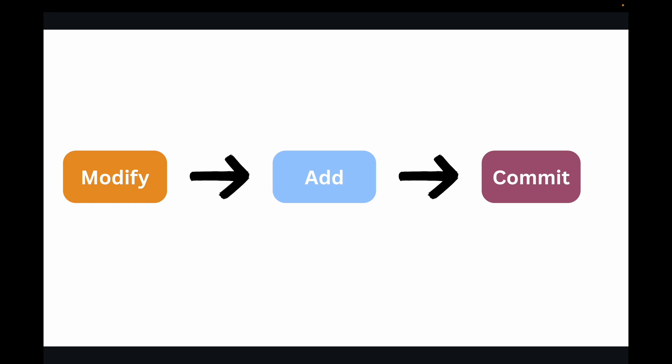This cycle of modify, add, and commit is something you will repeat hundreds if not thousands of times in your development career. In the next video we are going to explore how to undo mistakes — because they happen to everyone — looking at git restore and git reset for getting out of tricky situations. If you found this helpful, please hit that like button, subscribe, and let me know in the comments what your first commit message will be.